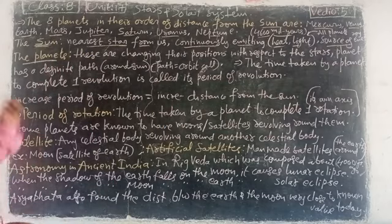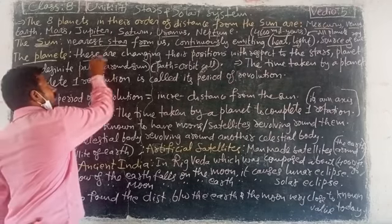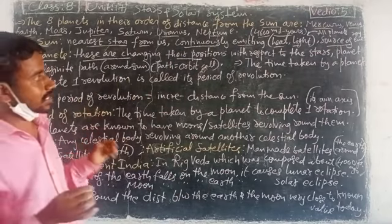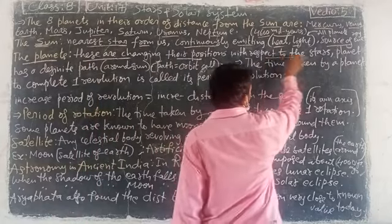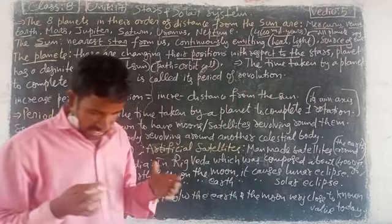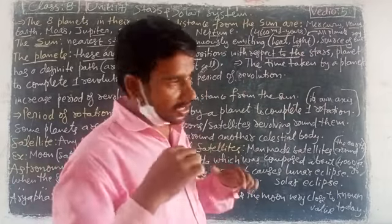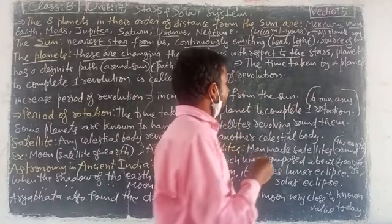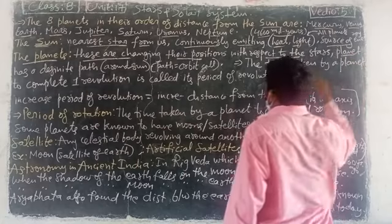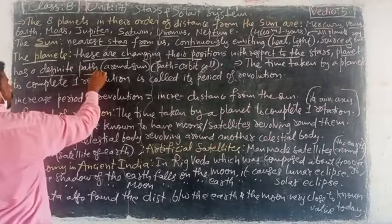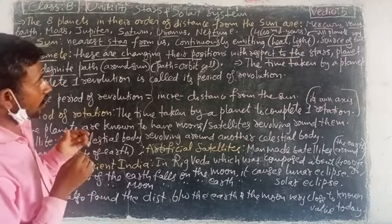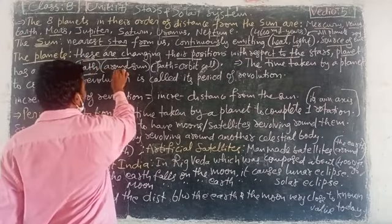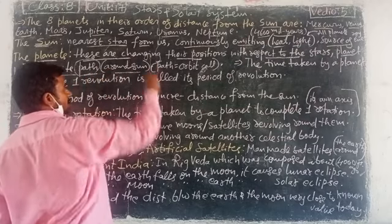Planets are changing their positions with respect to the stars. When you observe a planet's position relative to the stars, the planet is seen to change its position. A planet has a definite path, which is called its orbit, and that orbit is around the Sun.